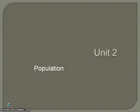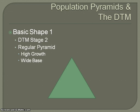Hello everyone and welcome to another session of AP Human Geography with Mr. Elrod. We're continuing in Unit 2 and today we're going to discuss the relationship that exists between the basic shapes of population pyramids and the demographic transition model, and how that relates to stages of development in terms of where a country is economically, socially, and in terms of population growth.